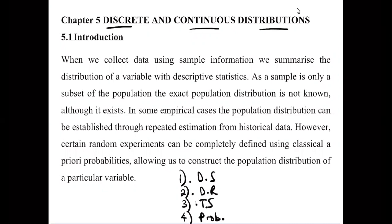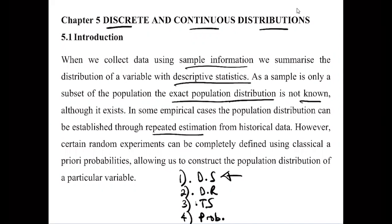We've talked about describing statistics in Chapter 1, where we summarize sample information. Now when we're dealing with a population, we can have what we call a population distribution. It could be known through repeated sampling and techniques, and we can talk about certain characteristics of these populations.